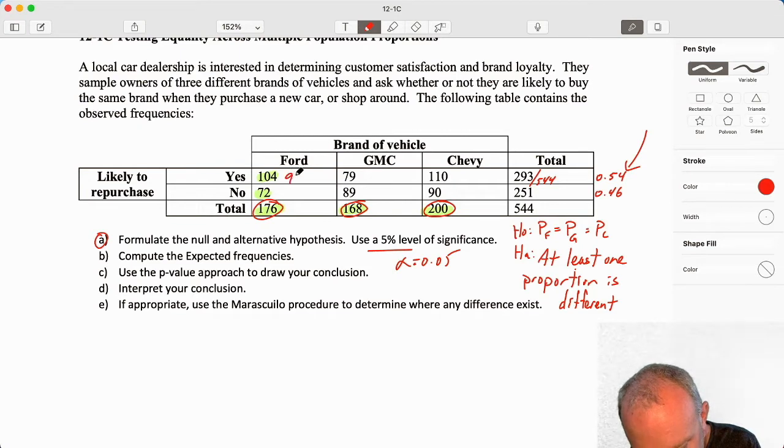0.54 times 168, 90.72. And 0.54 times 110. Nope. That's an easy mistake to make apparently today. Times 108.